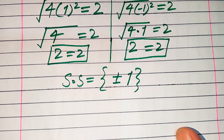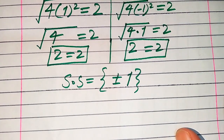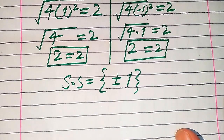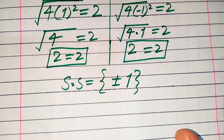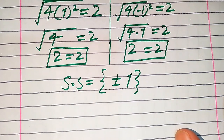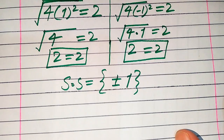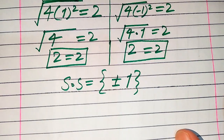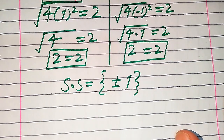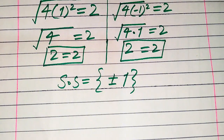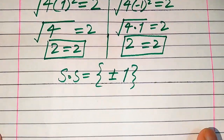Now the difference between a solution and an extraneous root: the roots which do not satisfy the given equation are called extraneous roots, and the roots which do satisfy the given equation are called solutions of that equation.